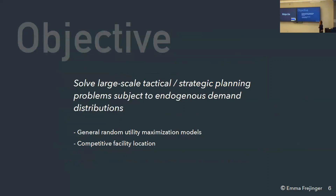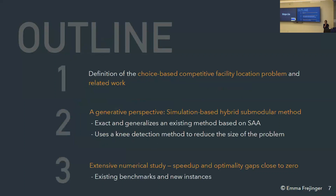What we want to do is solve large-scale tactical or strategic planning problems subject to endogenous demand distributions — meaning the distributions are decision-dependent. We use random utility maximization models, and we focus on a competitive facility location problem, which serves as a playground problem for this framework.